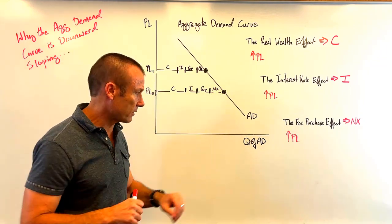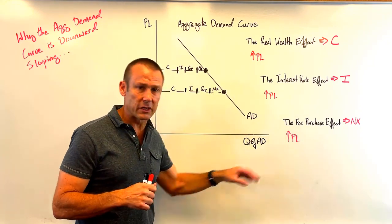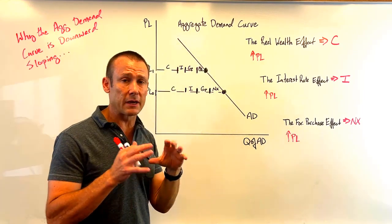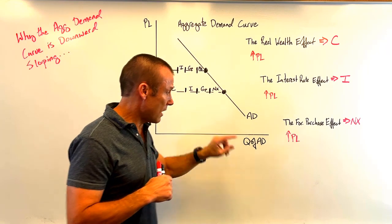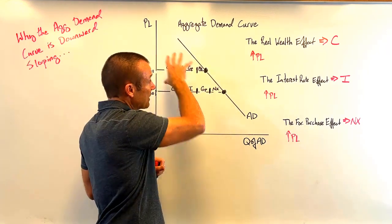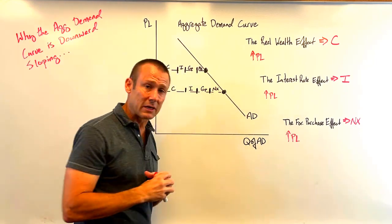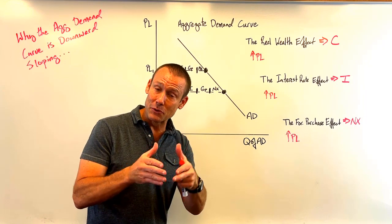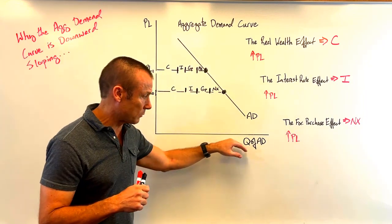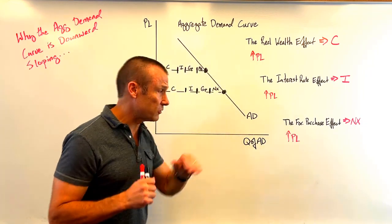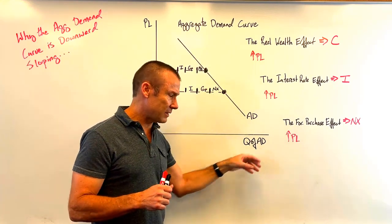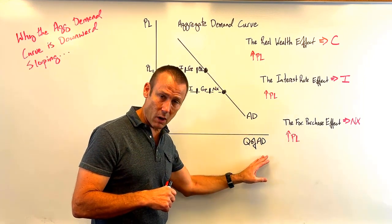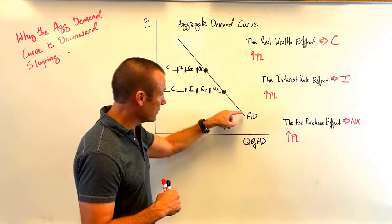Some of you may look at the horizontal axis and think it should say real GDP. Not yet — when I add the short-run aggregate supply (SRAS) and long-run aggregate supply (LRAS) curves, I'll change it to real GDP. But with just the aggregate demand curve, it's better to think of what we're measuring horizontally as the quantity of aggregate demand — the quantity of domestically produced goods and services demanded. I sometimes still label it 'quantity of AD' alongside 'real GDP' to remind students what we're actually measuring.